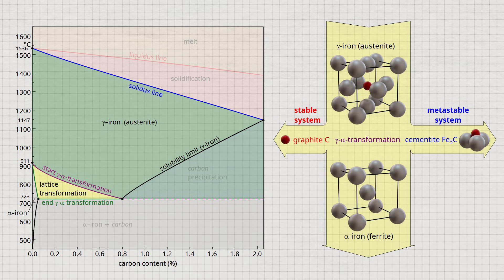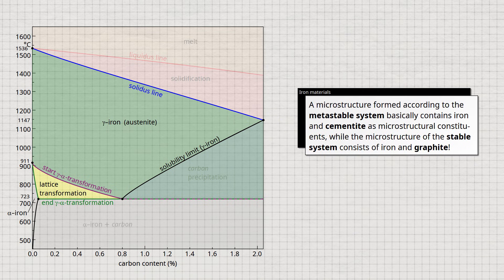Steel, with a maximum carbon content of 2%, has a relatively low carbon content and is therefore a typical representative of the metastable system. So note, a microstructure formed according to the metastable system basically contains iron and cementite as microstructural constituents, while the microstructure of the stable system consists of iron and graphite. Steels are generally produced according to the metastable system and cast irons according to the stable system.